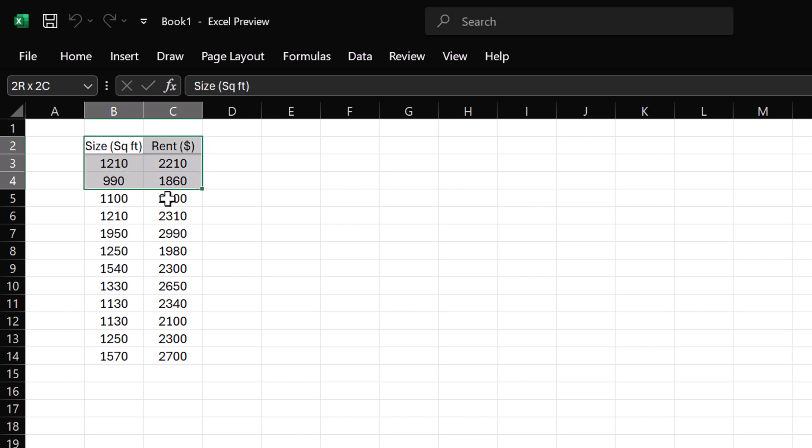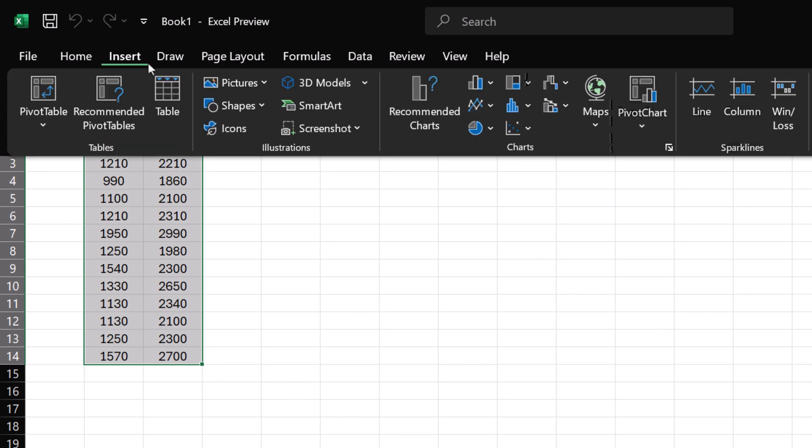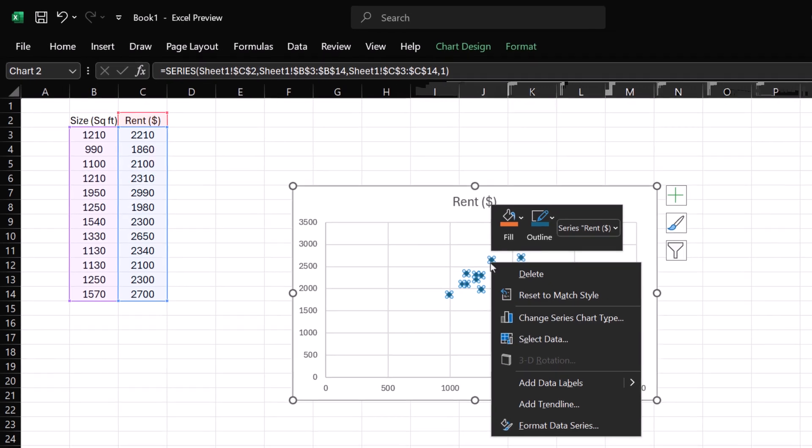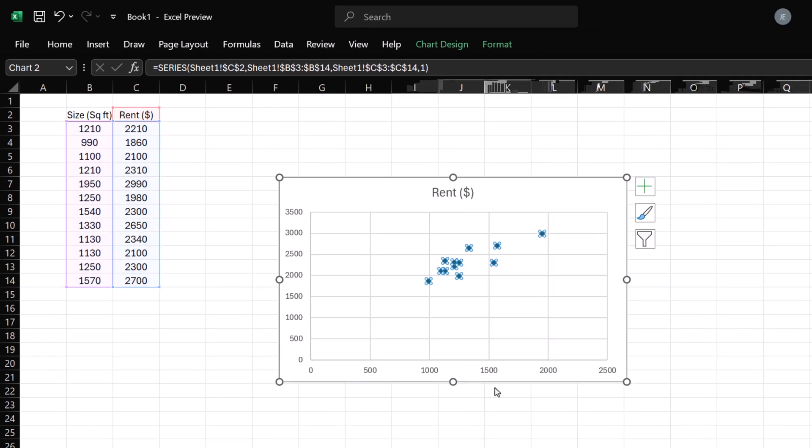Select the entire data. Ensure the X variable is on the left. Click Insert and select Scatter. Right-click on any of the dots and add Trendline.